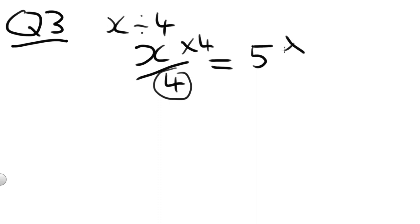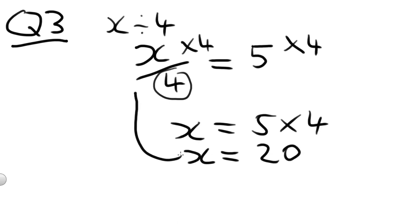Remembering, whatever we do to the left-hand side, we must do to the right-hand side. So in the end, we'll get X equals 5 times 4, which equals 20. We can test that by putting it back into here. So 20 divided by 4 equals 5. Tick.